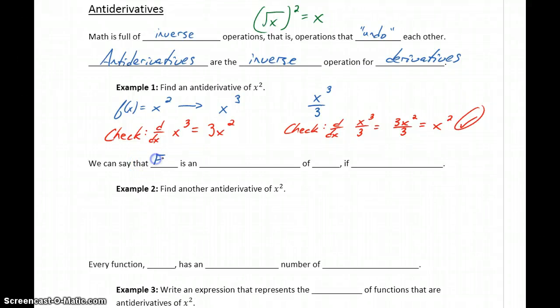In general, we can say that some function capital F of x is an antiderivative of lowercase f of x if the derivative of capital F of x equals lowercase f of x. So x cubed over 3 is an antiderivative of x squared, because when we take the derivative, we get to x squared. We're just thinking about working those derivatives backwards.